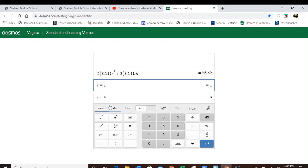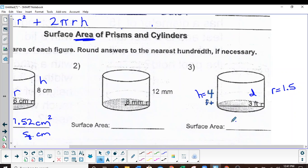Radius is 1.5, make sure you get your decimal in there, and then my height we said was four. And there it is, 51.81. 51.81 feet squared, or square feet.